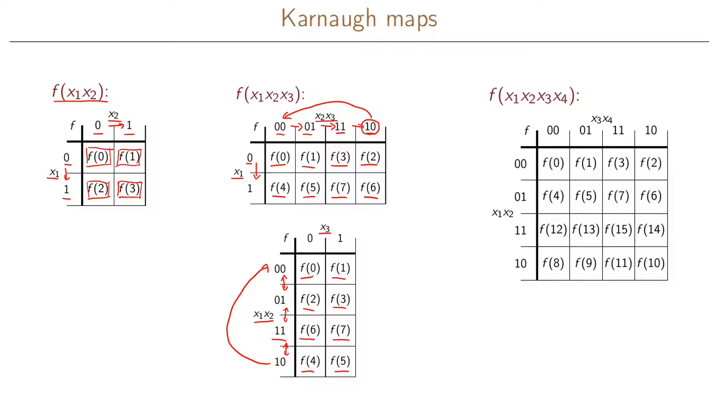Four variables is as far as we can go with two dimensions, because we can have at most two variables in each dimension. So here we have x1 and x2 in this dimension and x3 and x4 in this dimension. And again we have a Gray coding for both of our dimensions.